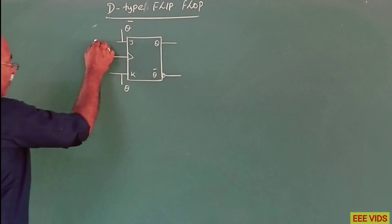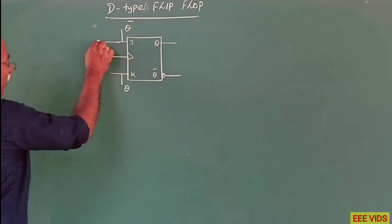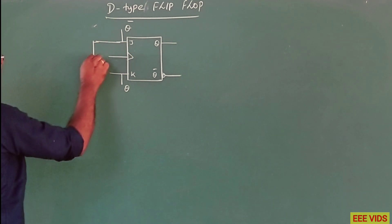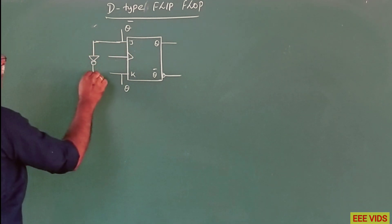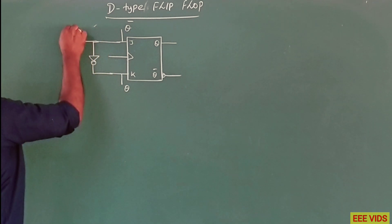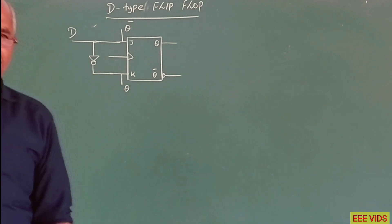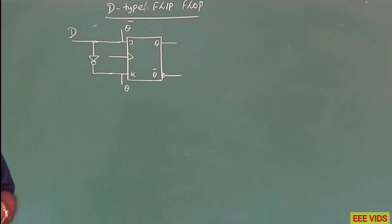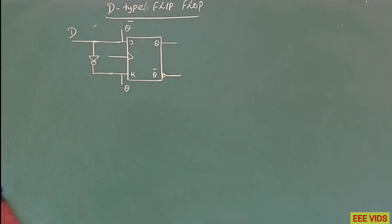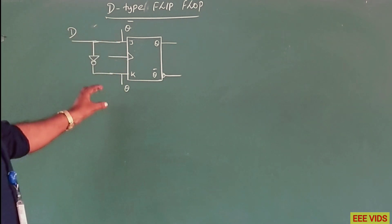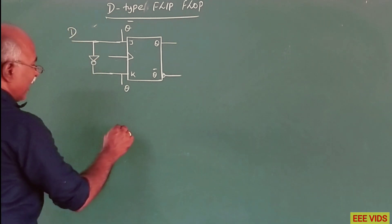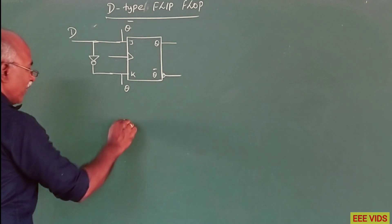In the J-K input, there are two things to connect. One diode and one NOT gate — J input applied and the N-D input combined with a NOT gate used. Then the J-K flip-flop diagram becomes the D-type flip-flop circuit diagram.